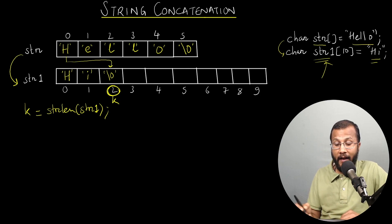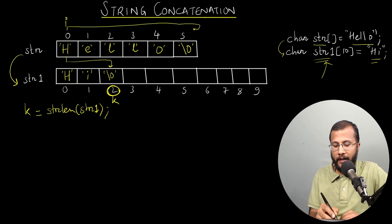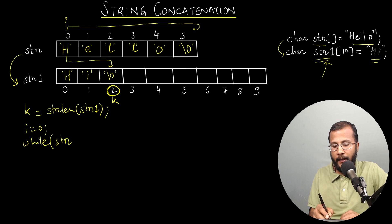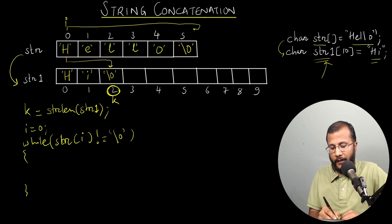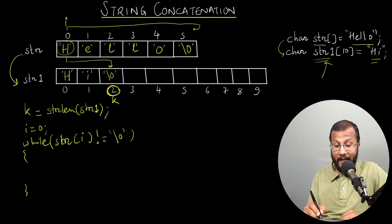Let index i keep track of all the elements of the source string str. I'll have to run a loop until I find the null character. I'll initialize i as 0, then write: while str[i] is not equal to null. If the element is not null — for example, 'h' is not null — I'll have to copy it to the destination.